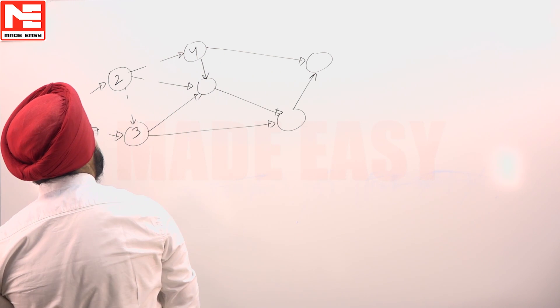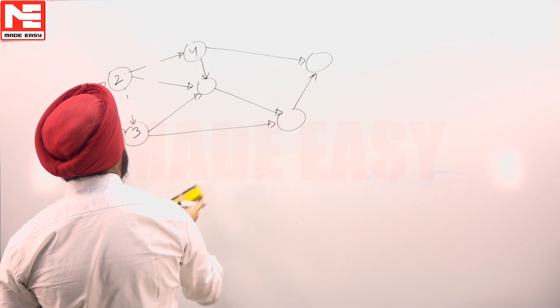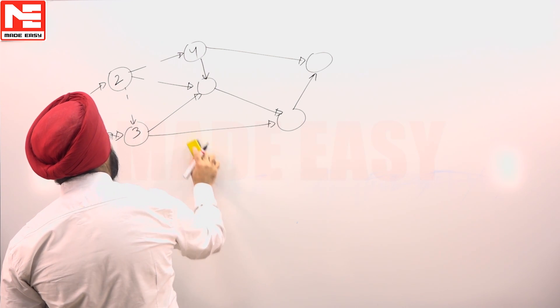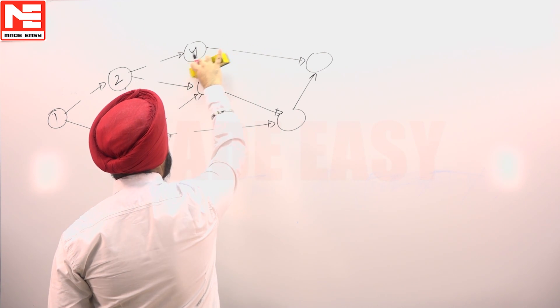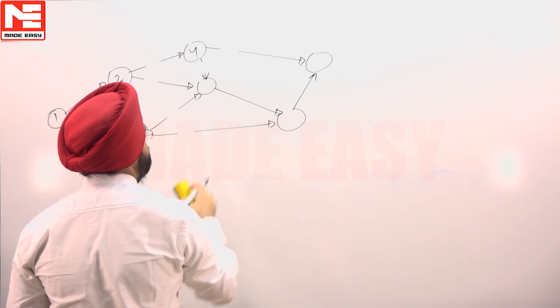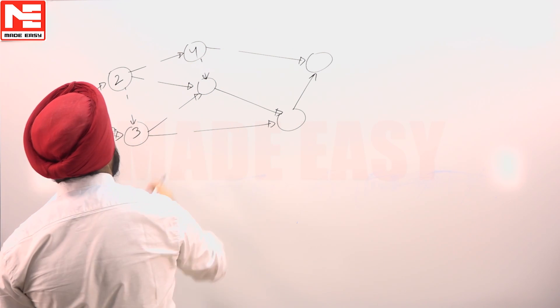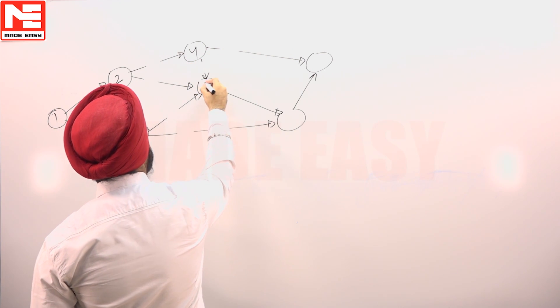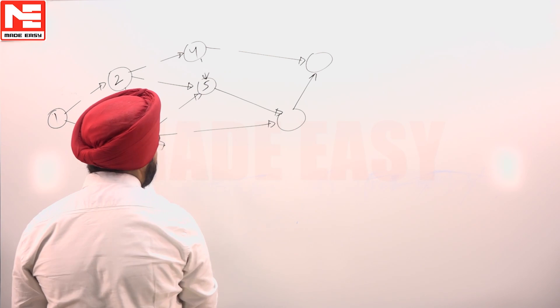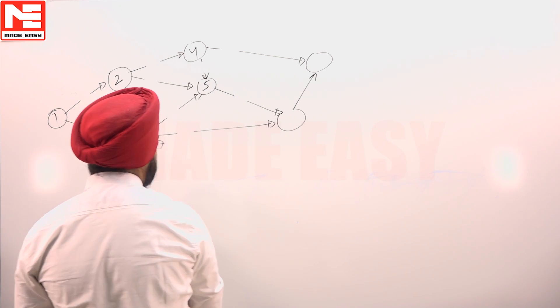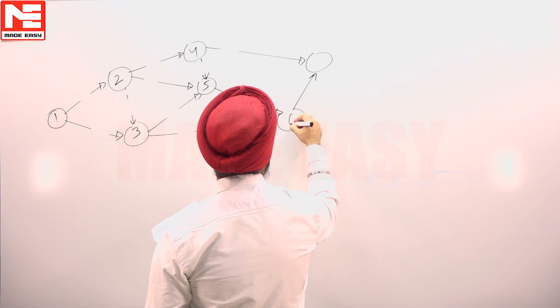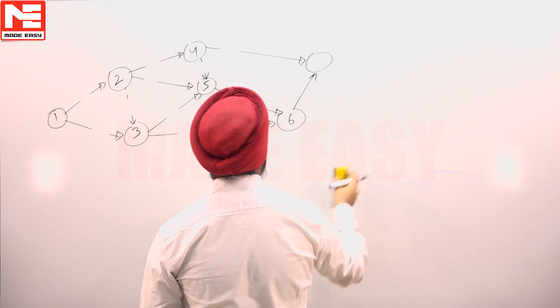Two new initial events are formed. Remove all the outgoing arrows, and new initial events are formed — this one is numbered 5. Remove all the outgoing arrows again, and a new initial event is formed — this one is numbered 6.